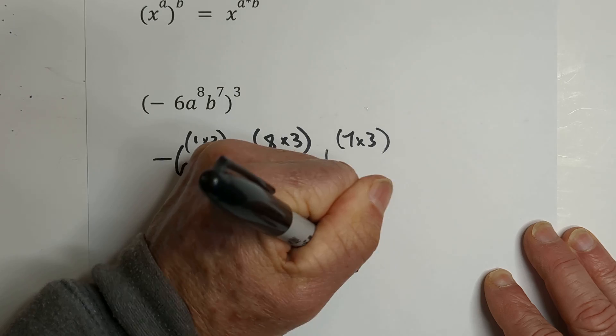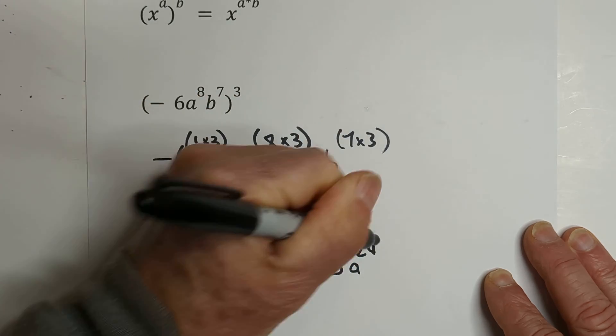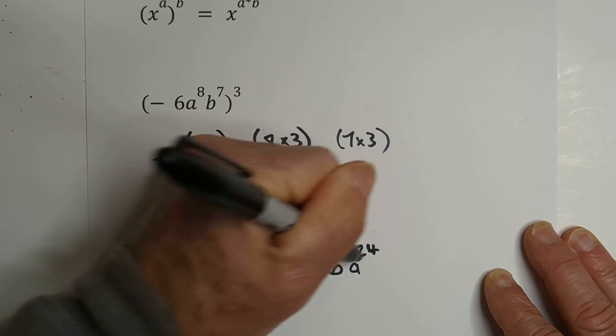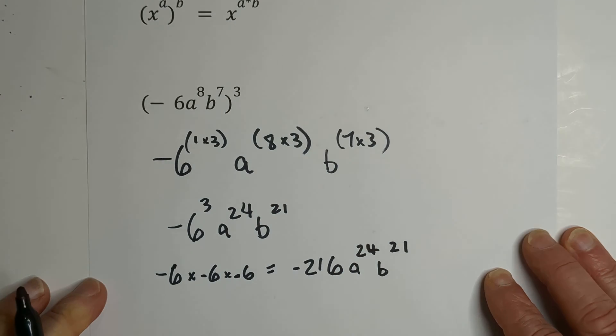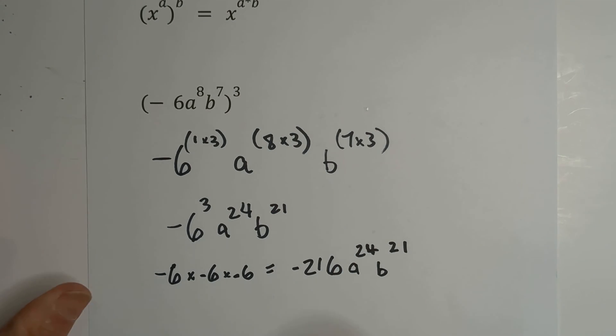And then we have A to the 24th, B to the 21st. So that's the first one when you're applying the power of power property.